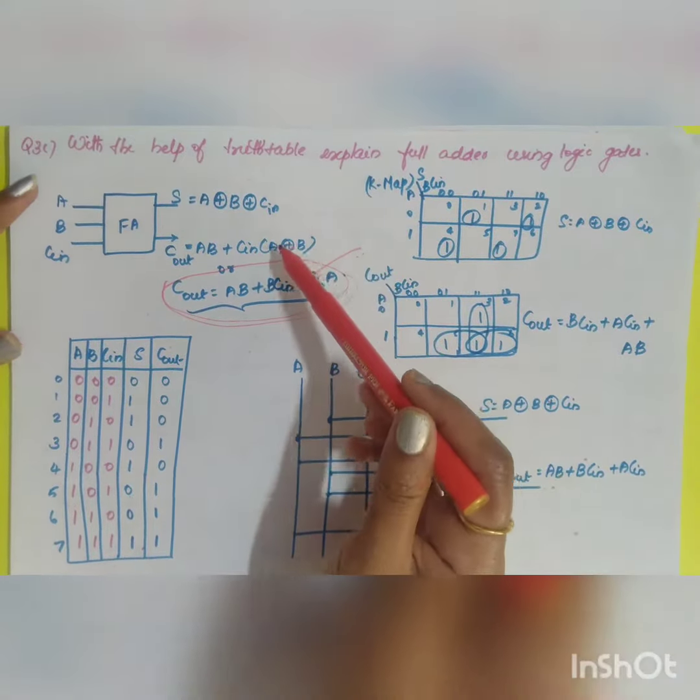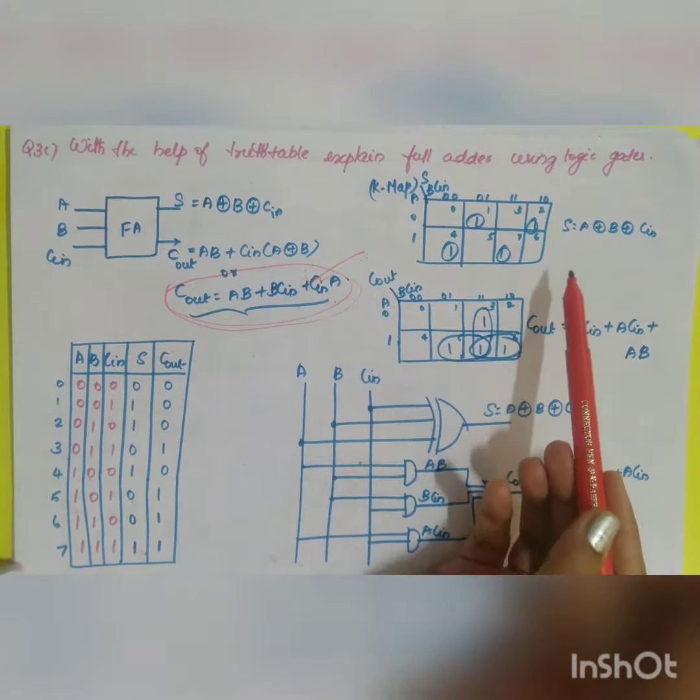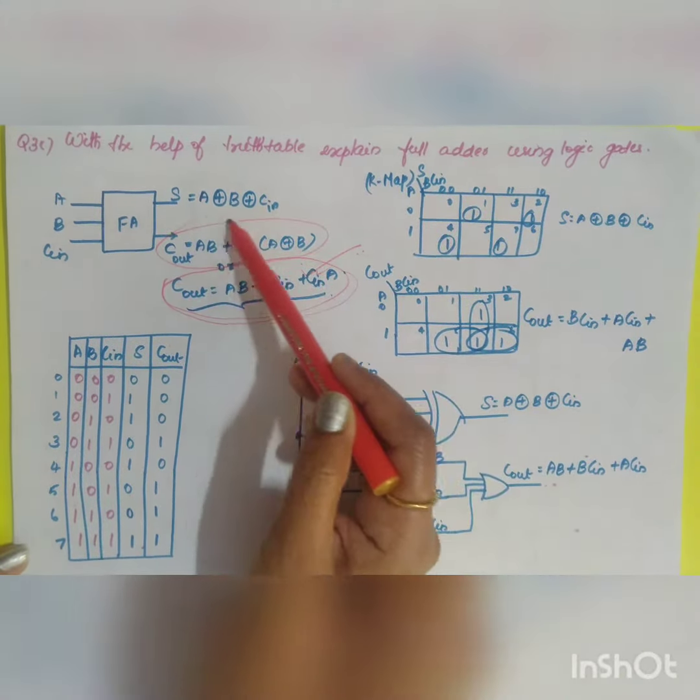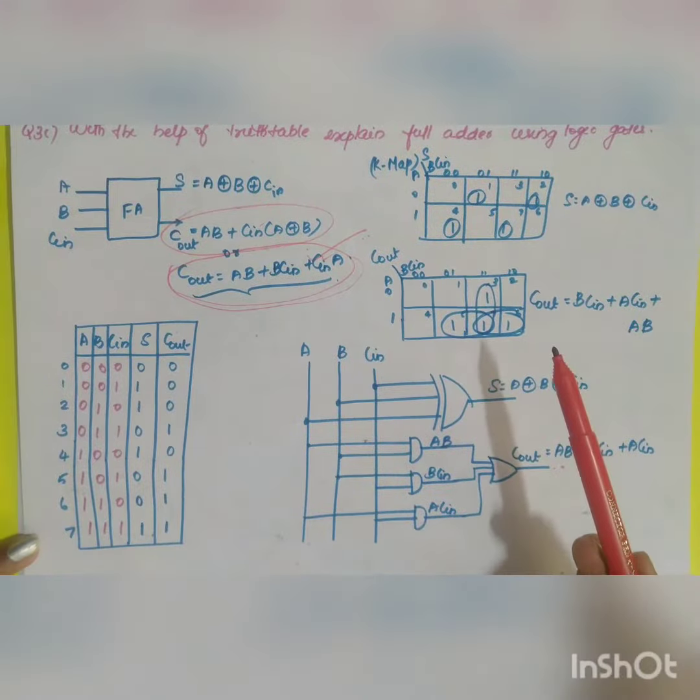If you have another problem which has been explained before - full adder using two half adders - for that you have to go for your first expression. So what is your truth table of your full adder?